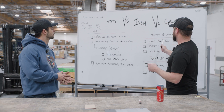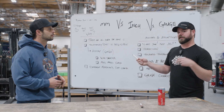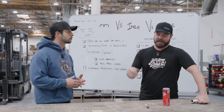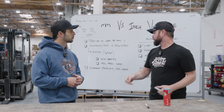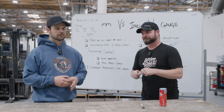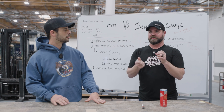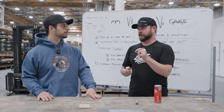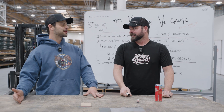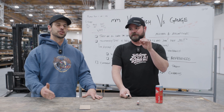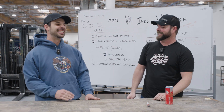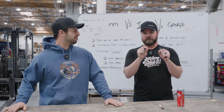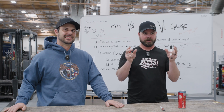Another thing we want to hit on is mistakes and assumptions when going between all three conversions. Oftentimes someone will say, 'I was going to use SendCutSend, but I need three millimeter material and you guys only have 3.175.' The issue is 0.175 of a millimeter is only about 6 or 7 thousandths of an inch. A human hair is between one and six thousandths of an inch in thickness — so we're literally splitting hairs. We're dealing with very, very small differences between 3mm and 3.175mm.